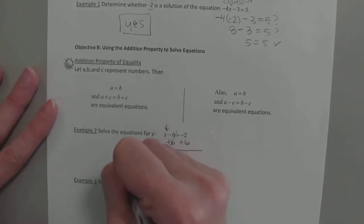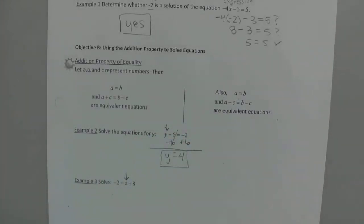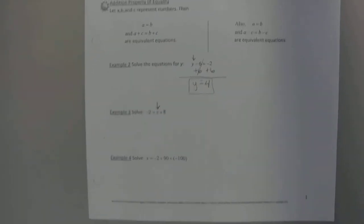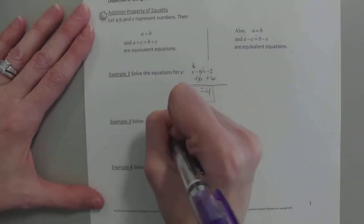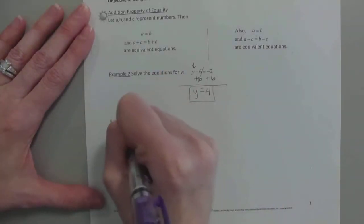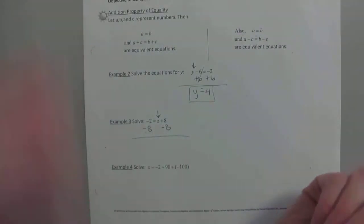On 3, it's really no different, except for we want to get z by itself now. And how is 8 added to it? Well, I just said it. How is 8 combined with z? It's added. So what's the opposite of adding? Subtracting. So we're just going to subtract 8, but if we do it to the right, we just make sure we do it to the left.